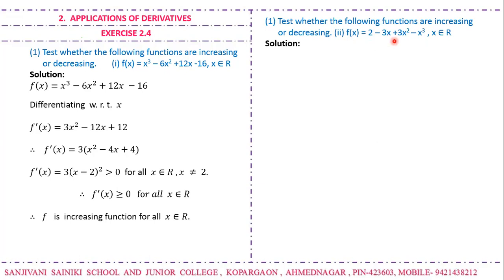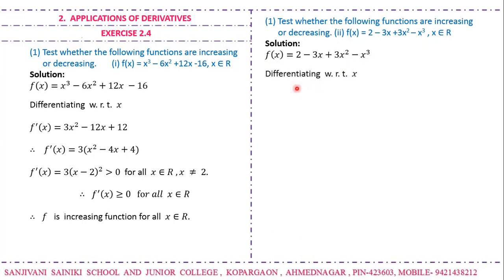The second example: f(x) = 2 - 3x + 3x² - x³, x ∈ ℝ. Differentiating with respect to x, f'(x) = -3 + 6x - 3x².